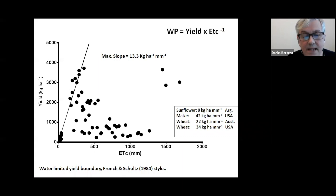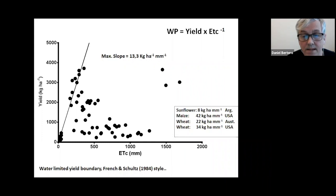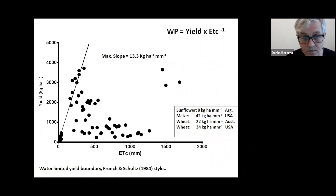Another dimension coming from this relationship is that the idea that quinoa uses little water does not seem to apply to all conditions. Some points show very high water use. In the box to the right, maximum slope values — the water-limited yield — are shown for sunflower at around 8 kilos per hectare, maize at around 42, and wheat in Australia and the United States. Save for sunflower, the values for quinoa are pretty low in comparison.